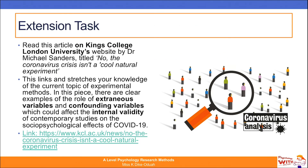We've reached the end of that task. For an extension activity aimed at students targeting an A or A*, there is an article written by Dr. Michael Sanders from King's College London, titled 'No, the coronavirus crisis isn't a cool natural experiment.' You'll find this an interesting read as there are examples of extraneous variables and confounding variables which could affect the internal validity of contemporary studies on the effects of COVID-19 on our socio-psychological situations. I've put the link there — have a read of it.